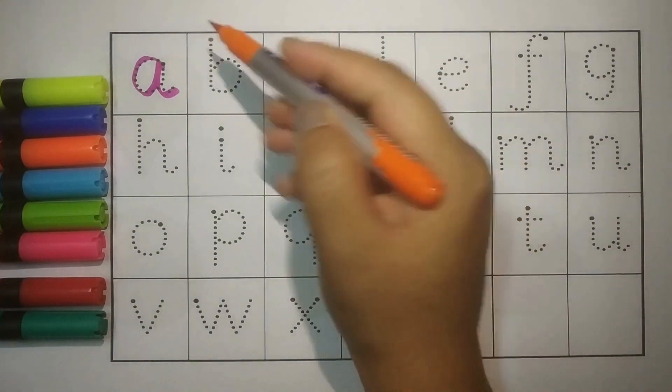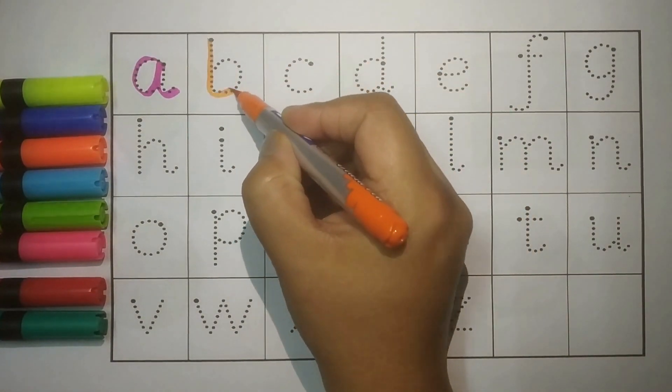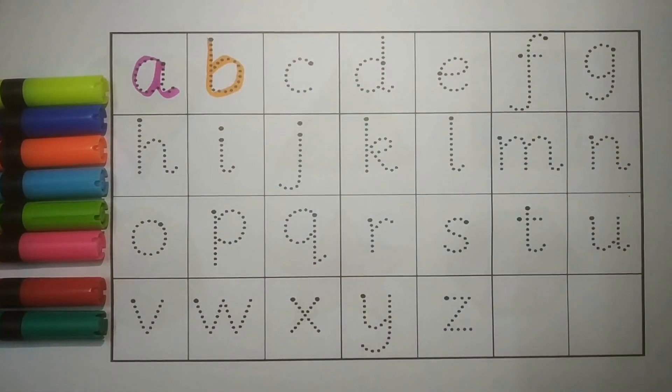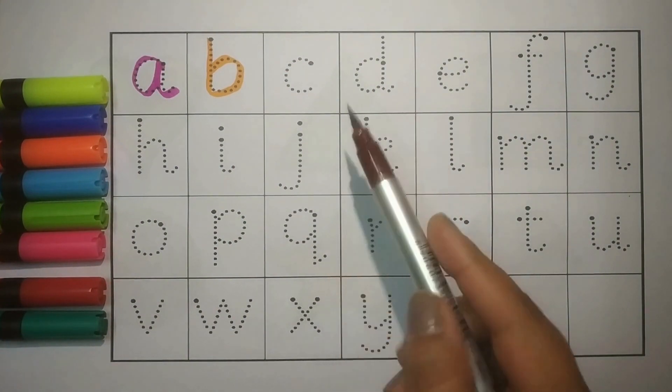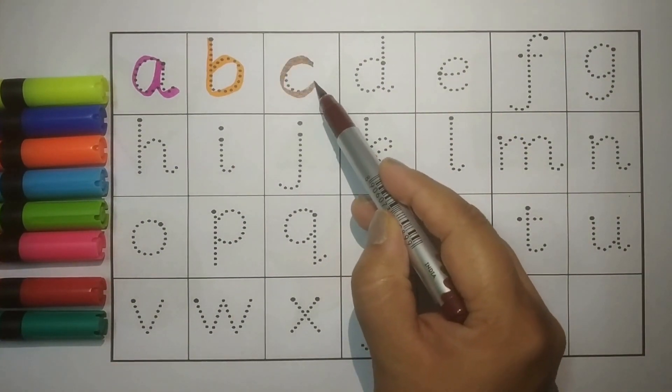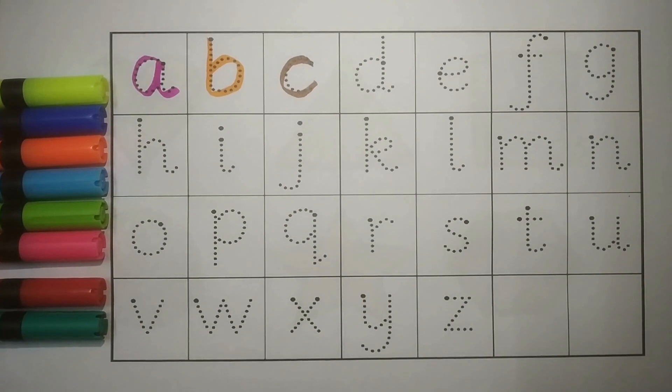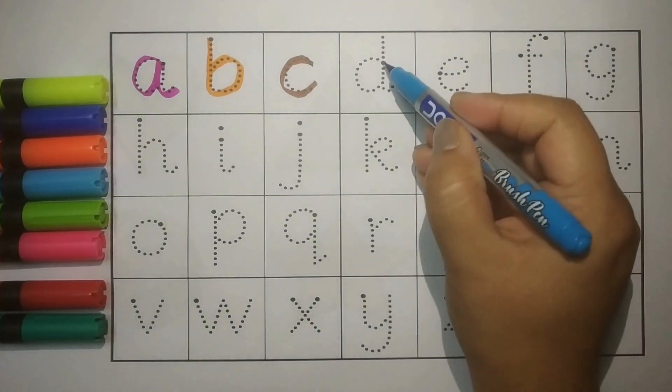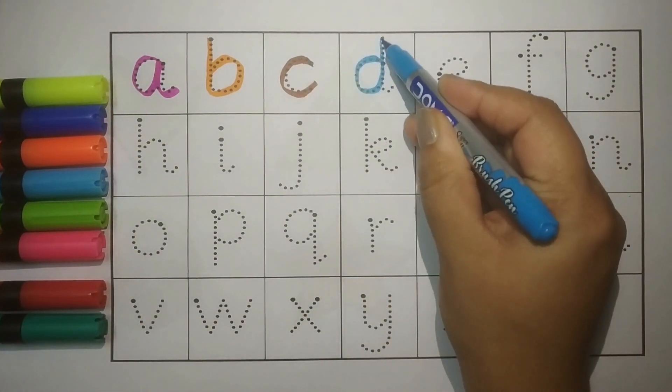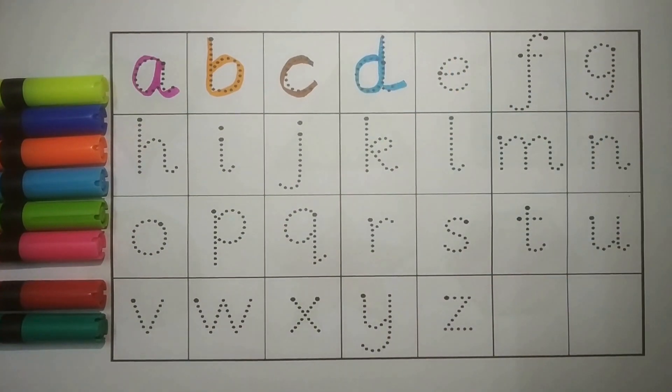Orange B, B for Ball. Brown C, C for Camel. Blue D, D for Doll. Green.